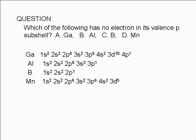For boron, the valence shell is the 2nd shell. It has 2 electrons in the 2s subshell and 1 electron in the 2p subshell. For manganese, the valence shell is the 4th shell. It has 2 electrons in the 4s subshell. The 4p subshell has no electrons. So the correct answer is D, manganese.